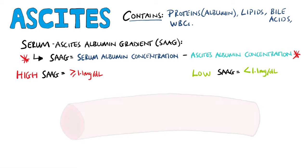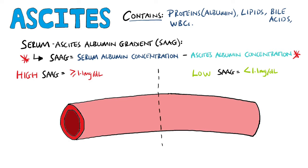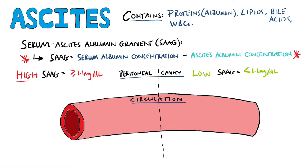The reason the serum ascites albumin gradient is useful is because it shows us what's occurring with the Starling forces between the ascitic fluid and the serum. It shows us whether the imbalance is due to hydrostatic pressure imbalance or oncotic pressure imbalance, which are caused by different pathologies.